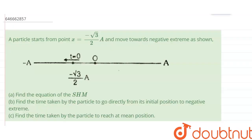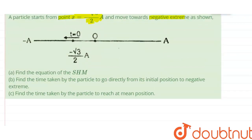Hello everyone. The question is: a particle starts from point x, where x is given as minus root 3 by 2 times amplitude 'a', at t equals to zero, and moves towards the negative extreme as shown in the figure. We have to calculate: part A, find the equation of the simple harmonic motion; part B, find the time taken by the particle to go directly from its initial position to the negative extreme; and part C, find the time taken by the particle to reach the mean position.